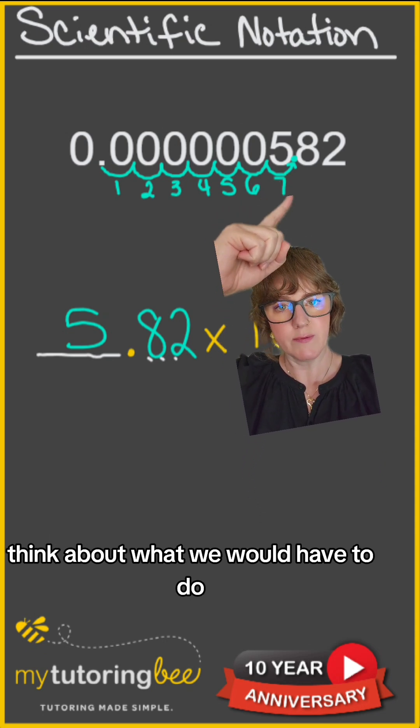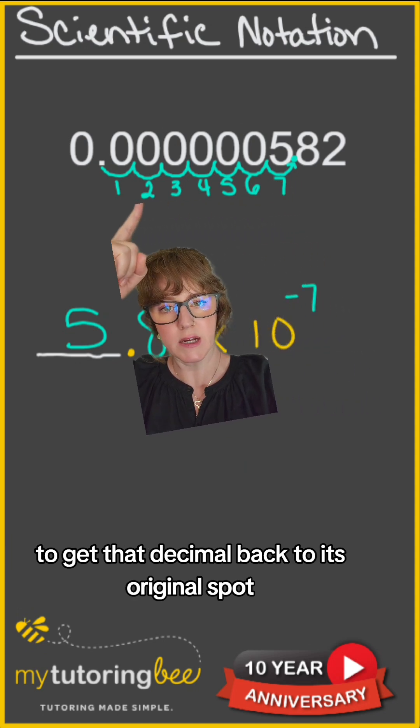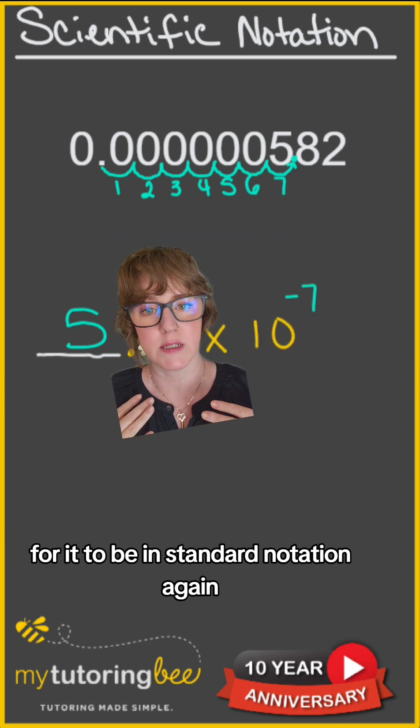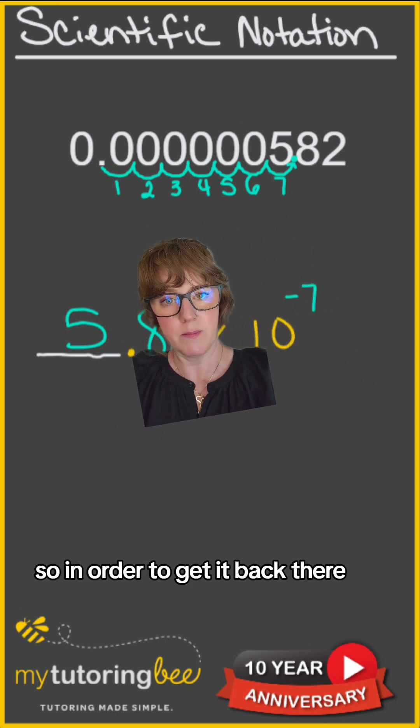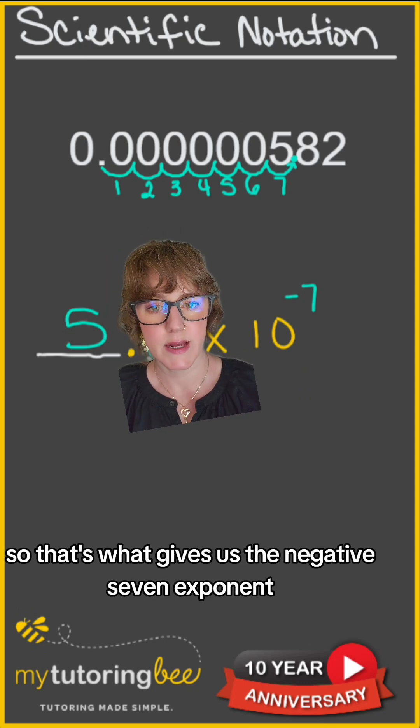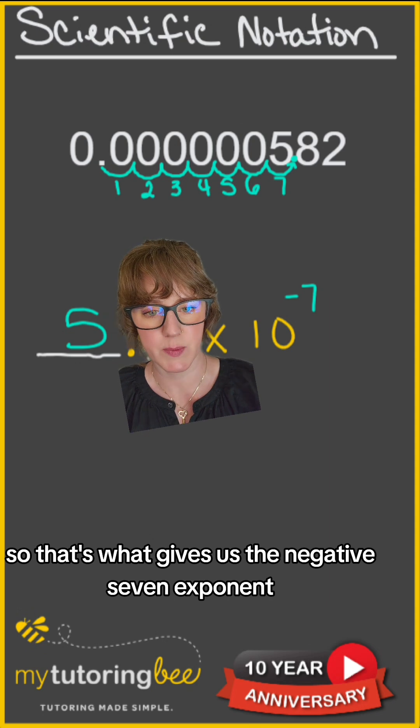Think about what we would have to do to get that decimal back to its original spot for it to be in standard notation again. To get it back there, we would have to move it left seven times. So that's what gives us the negative seven exponent.